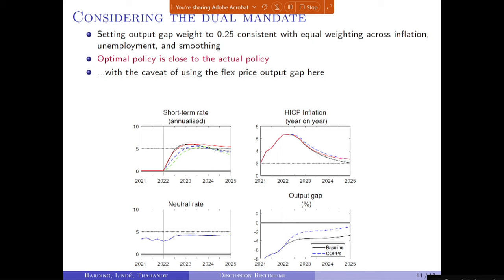One could also consider adding an output gap weight: if we set the output gap weight to 0.25 — consistent with equal weight across inflation, unemployment, and smoothing by Okun's law — then we get 0.25 on output gap. With both the neutral rate in the model and a lower inflation target for consistency, the optimal policy is very close to the actual interest rate path in green, though again this is only a linear model, and potentially with non-linear features you would need a higher interest rate.